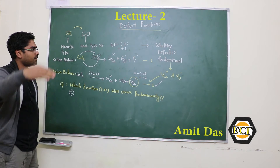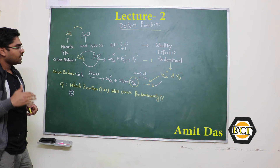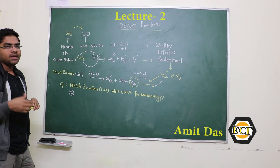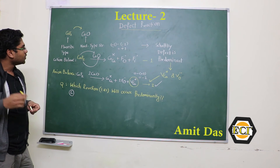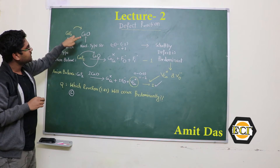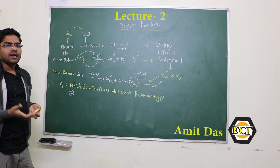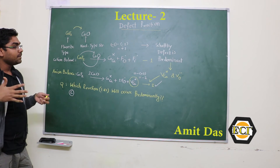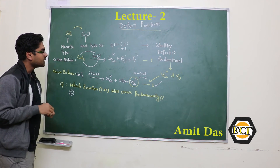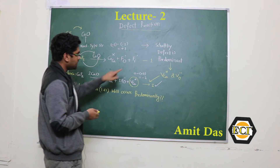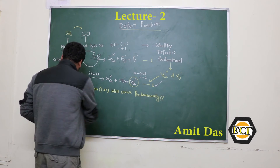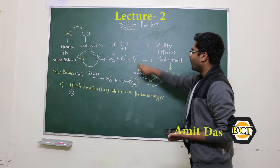Now we will extend this concept further. People dope materials to enhance properties — electrical, magnetic, and so on. Here we are doping CaF₂ into CaO to increase or modify the conductivity of the overall material. The question is: what will be the charge carrier? From a theoretical point of view we have to balance these defect species to another extent.